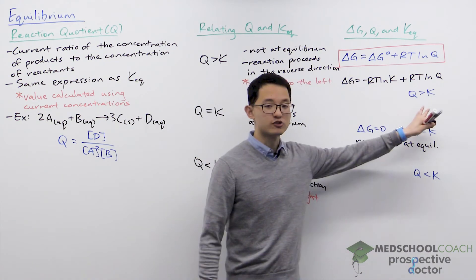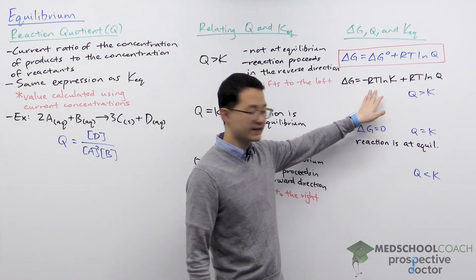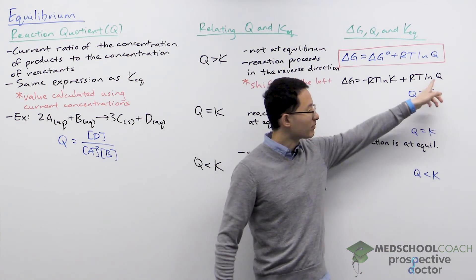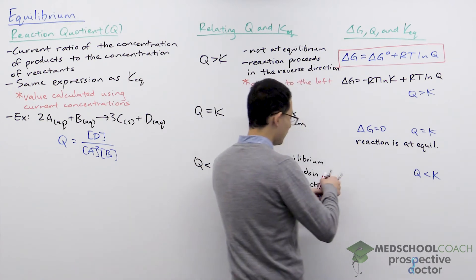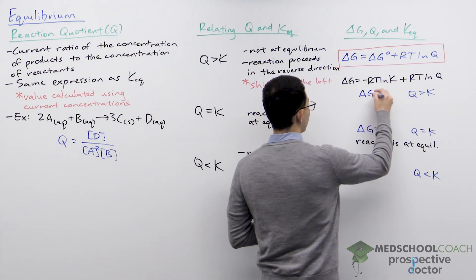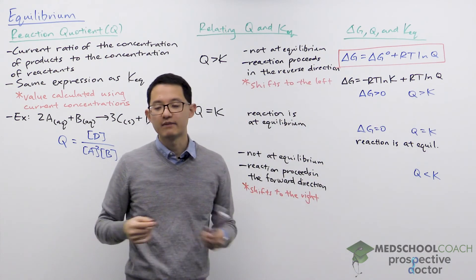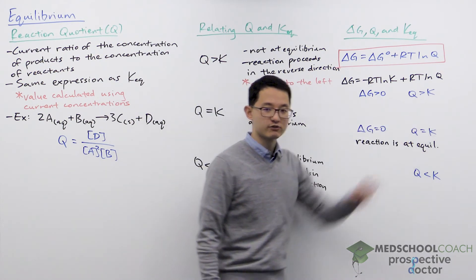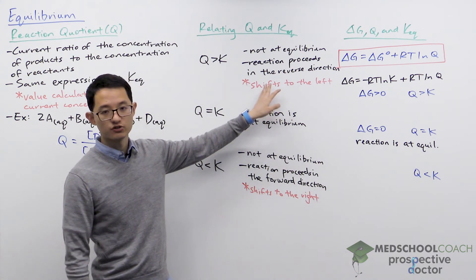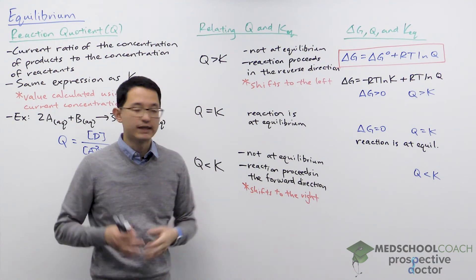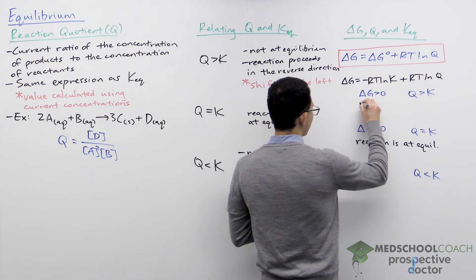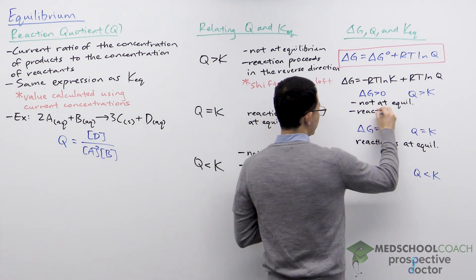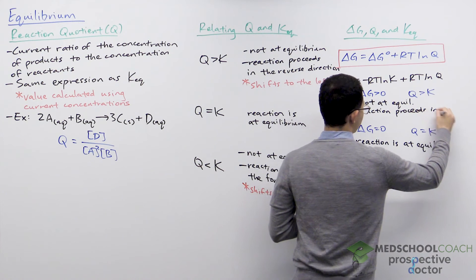If Q is greater than K, the positive RT ln Q term is larger than the negative RT ln K term, so delta G is positive. A positive delta G means the reaction is non-spontaneous in the forward direction. This makes sense because when Q > K, the reaction proceeds in the reverse direction. So when delta G > 0, the reaction is not at equilibrium and proceeds in the reverse direction.